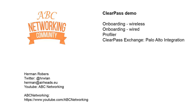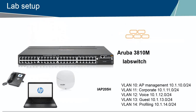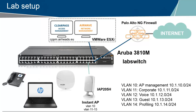In the last sessions, we onboarded an Android tablet, we onboarded a Windows 10 system as a contractor, we did some profiling on IP phones, on access points, and we used this demo setup for that. There is a Palo Alto Firewall here, and what we can do — which is pretty cool — is from ClearPass, as soon as we learn the identity of a user on the network, we can share that information with Palo Alto. And we call that ClearPass Exchange.